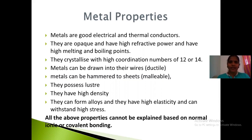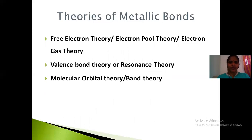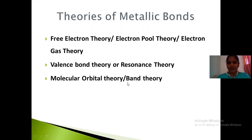In order to explain bonding in metals, there are various theories proposed. The major three theories are: one, the free electron theory or electron pool theory; two, the valence bond theory, also called resonance theory; and three, the molecular orbital theory, also known as band theory. Let's discuss each one in detail along with their limitations.